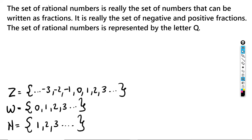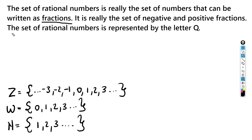Now we're looking at the set of rational numbers. The set of rational numbers is really the set of numbers that can be written as fractions — the set of negative and positive fractions. The set of rational numbers is represented by the letter Q.